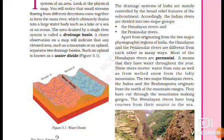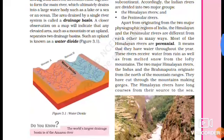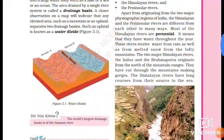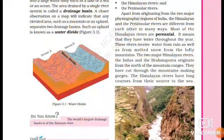Himalayan rivers are from the Himalayas and Peninsular rivers are from our peninsula. The Himalayan rivers are perennial, meaning they flow throughout the year.